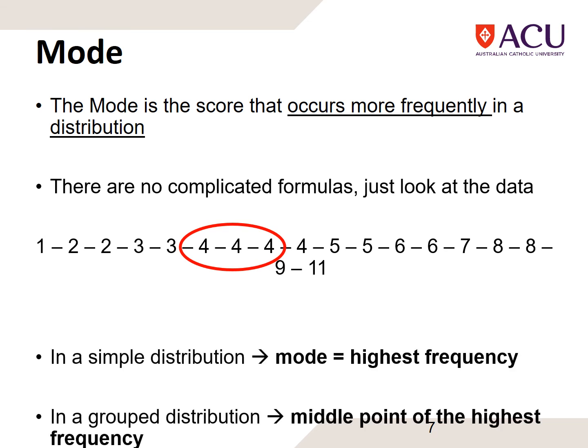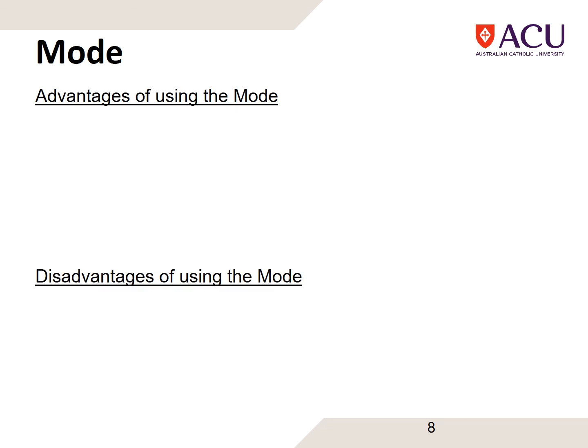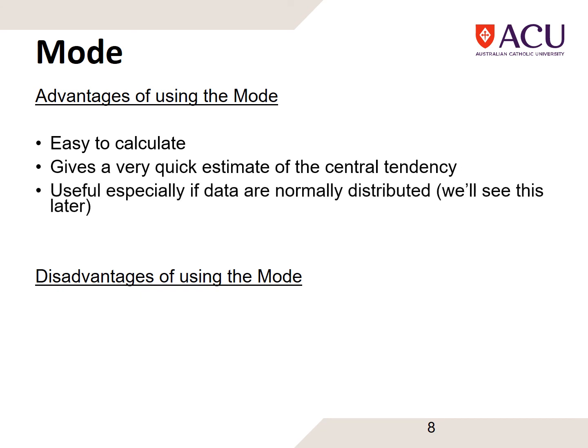In a simple distribution, the mode is the highest frequency. In a group distribution, it's the middle point of the highest frequency. The advantages of using the mode are that it's very easy to calculate and it's a quick estimate of central tendency. If there's normal distribution, which we'll talk about later, most data sets are somewhat normally distributed and we tend to see the most common number be somewhere around the middle.